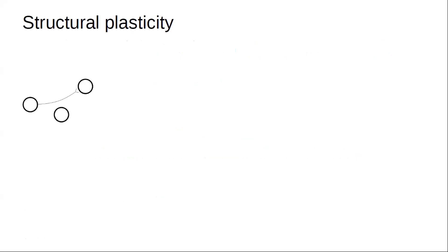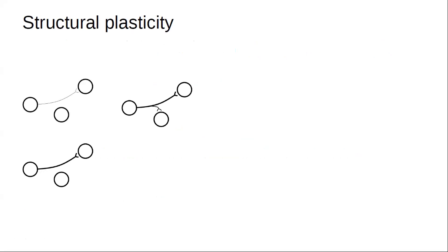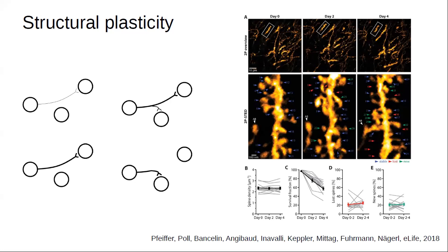I'll start by talking a bit about structural plasticity. When we talk about synaptic or functional plasticity, we are talking about strengthening and weakening of synaptic weights that already exist — there is already a connection between two neurons and it can get stronger or weaker. When I talk about structural plasticity, I mean the creation of new synaptic contacts that didn't exist before, or deletion of contacts that existed, and this can happen between the same pair of neurons or different pairs.